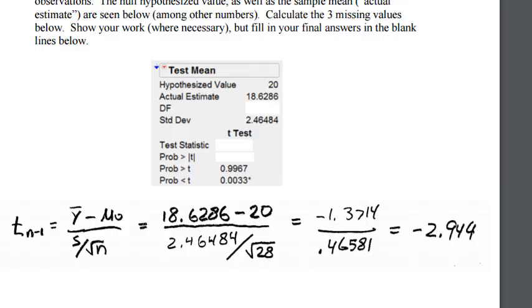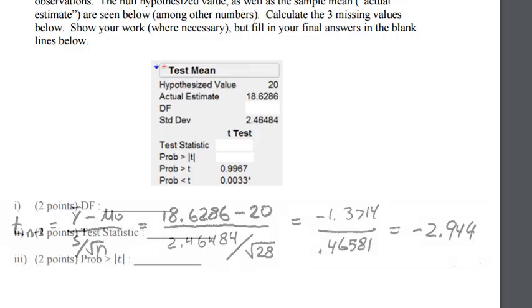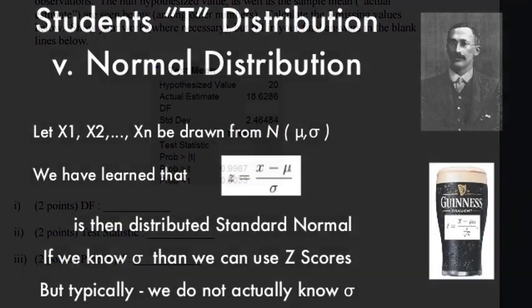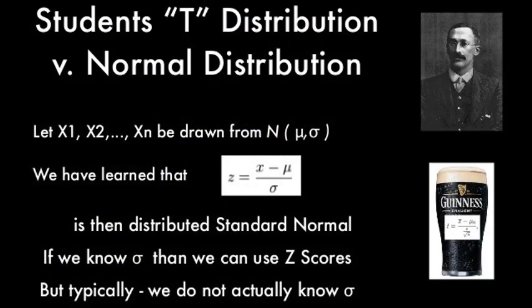It's important to note that this is negative because our actual estimate is below the hypothesized value. So when we're lower than what we hypothesize it to be we get a negative test statistic. Why is it a t? It's a t because we're dealing with the mean and we don't know the true standard deviation. We just have a standard deviation from our sample.